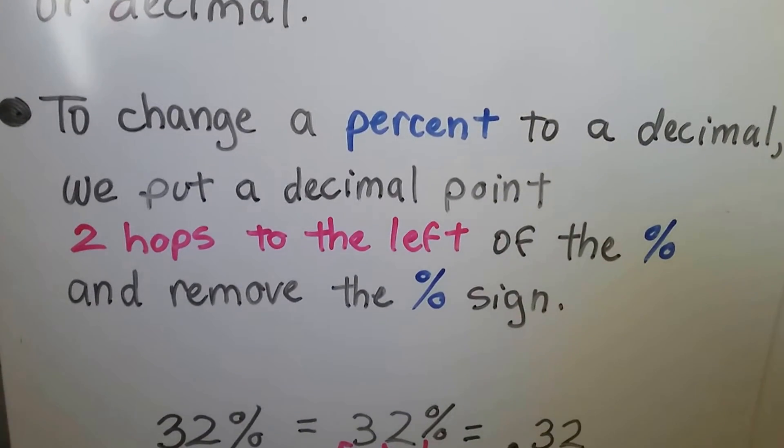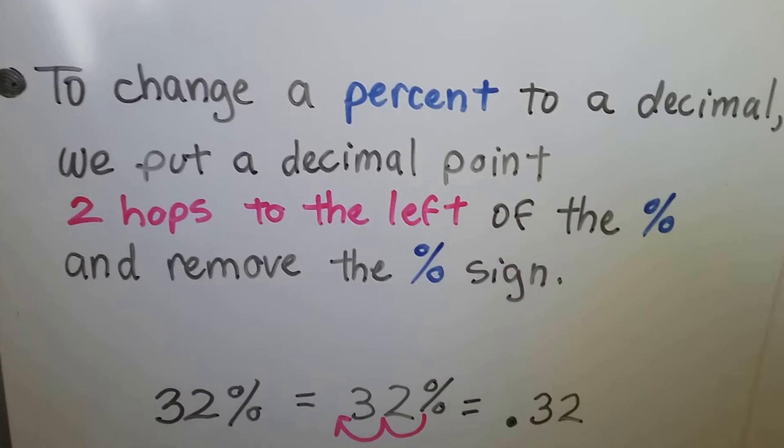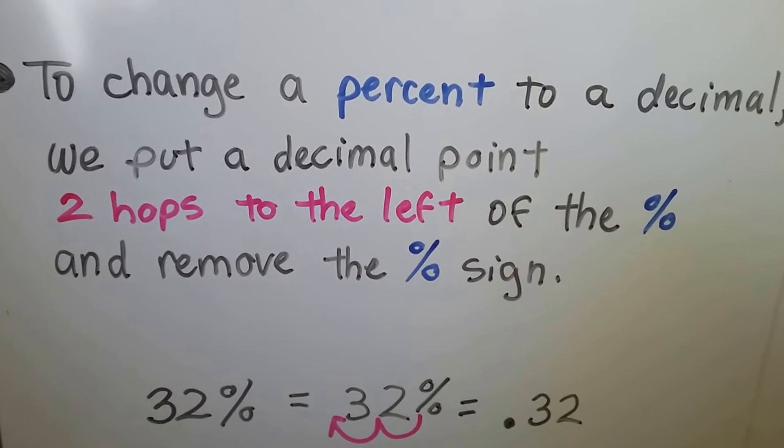To change a percent to a decimal, we put a decimal point two hops to the left of the percentage sign, and then just remove the sign. It's that easy.